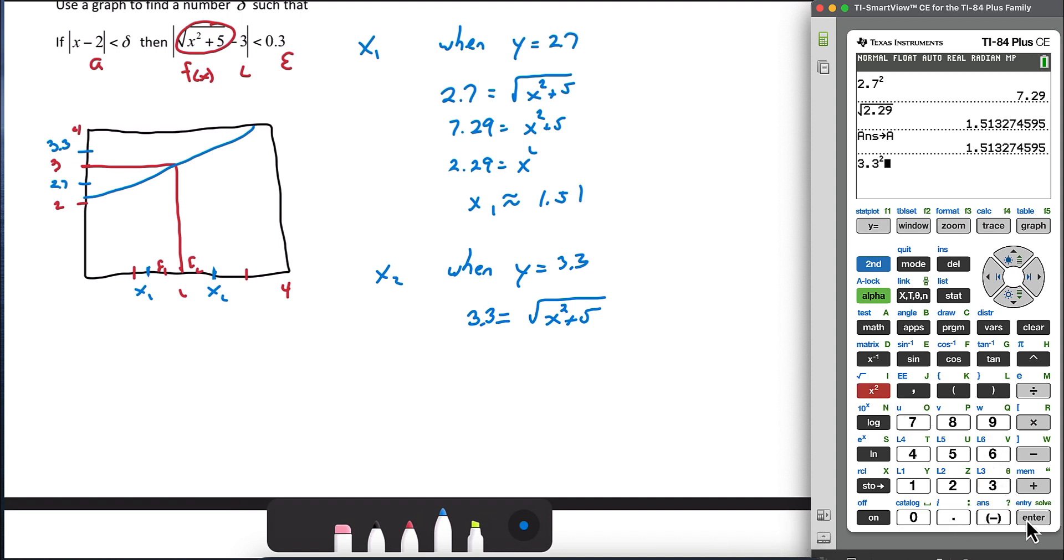3.3 squared is 10.89. Then we want to subtract 5. And then we can take the square root of 5.89. And so here we get x₂ is roughly equal to 2.43. And I'm going to store that value in B. So store in alpha B so that we know where it is later when we need it.